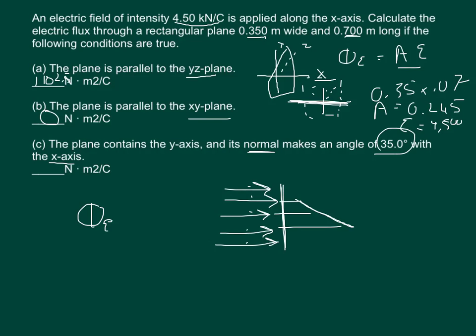Now finally on part C, it says it's making a 35 degree angle with the normal. This is important because this would be the normal, and it's making a 35 degree angle away from that, 35 degrees right here. So to calculate that, the electric flux equals E times A times cosine theta, with theta being 35 degrees.